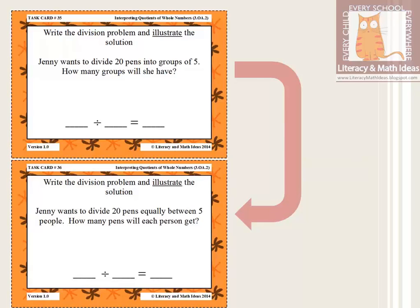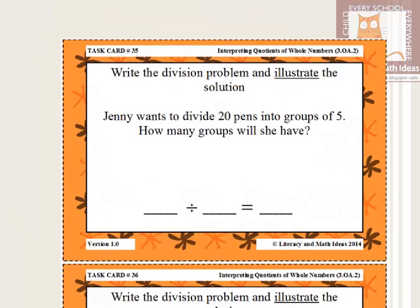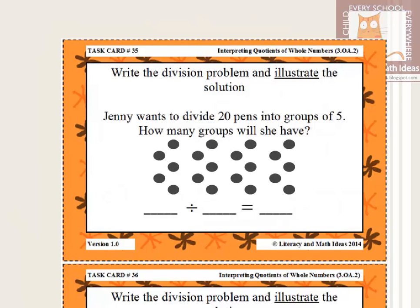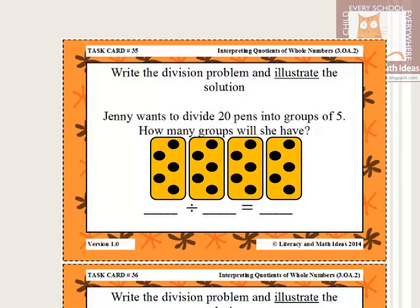Another task card puts both approaches into action with a word problem. Each task card has a matching card so the distinction between approaches can be practiced. Students write the division problem and illustrate the solution — giving them a mental picture of what division means. For example: 'Jenny wants to divide 20 pins into groups of five. How many groups will she have?' The problem is 20 divided by 5. Grouping 20 pins into groups of 5 gives 4 groups.